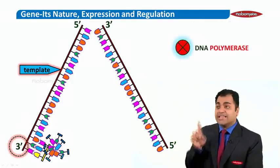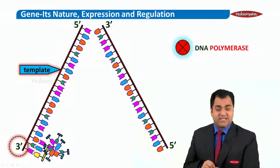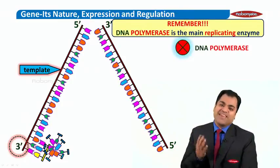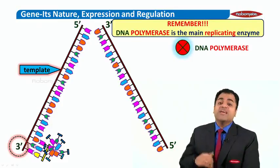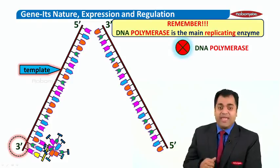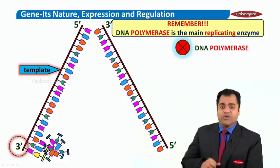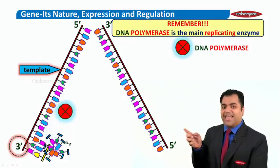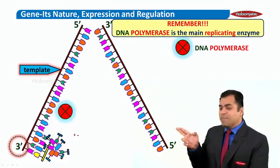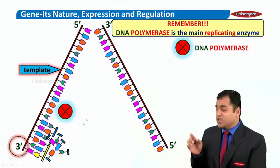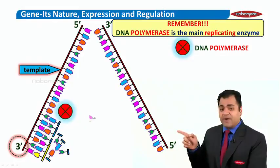That enzyme is called DNA polymerase. Remember, DNA polymerase is the main replicating enzyme because it will replicate or make the new strand of DNA. Let's see how it would do that. That's the polymerase here. It is scanning the template, adding the complementary base pairs, and building up the new strand. You can see how that is happening.